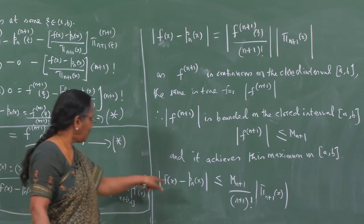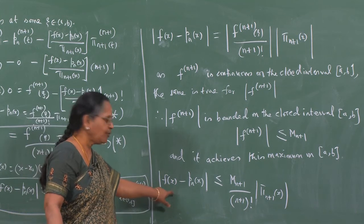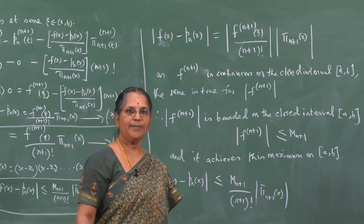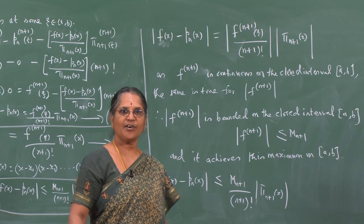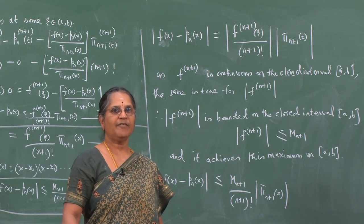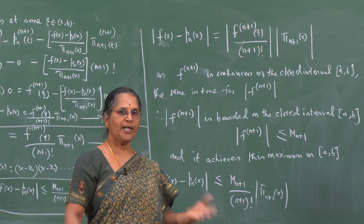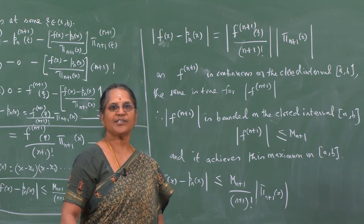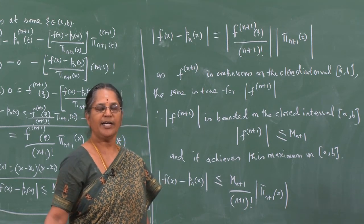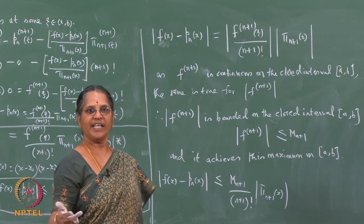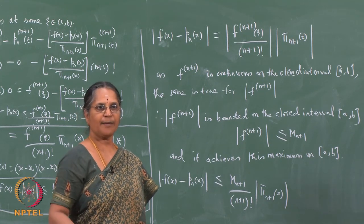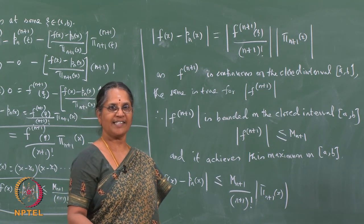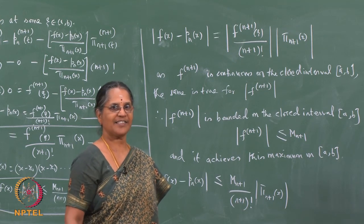So we have been able to show the error in interpolation and also an estimate of the size of the bound on the error, namely this result. With the help of this inequality we can provide an estimate on the size of the error bound when we interpolate a given function f(x) by means of an interpolating polynomial of degree at most n. We will look into these details in the next class.